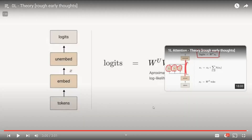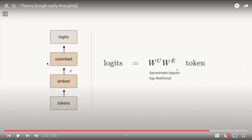Just stating the obvious for people who haven't done linear algebra in a while: we think of vectors as column vectors, so we multiply the matrix on the left and the vector on the right. When you see an expression like W_U W_E, if your vector x is on the right, it means you first multiply by W_E, then by W_U. It's a little annoying but you're always reading these expressions from right to left in terms of what happens first.